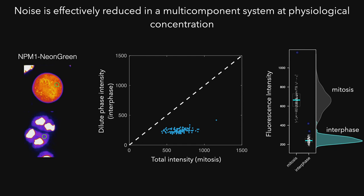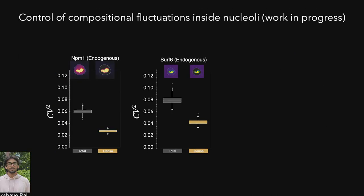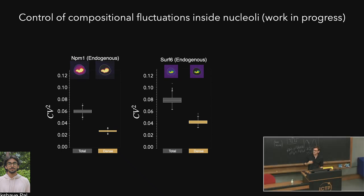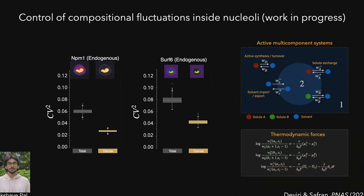One obvious next question is what happens inside the compartments, especially in the nucleolus where ribosomes are made. Akshay, a new student in my group and Tony's group, is now measuring concentrations of multiple simultaneously labeled proteins inside living cells — both inside the nucleolus and outside — and measuring noise in individual components but also covariations among them. Preliminary data show that also in the dense phase, in the nucleolus, you get a quite significant reduction of noise. We have extended the theory to multi-component systems, and the goal is to understand the constraints of noise reduction in an endogenous system.